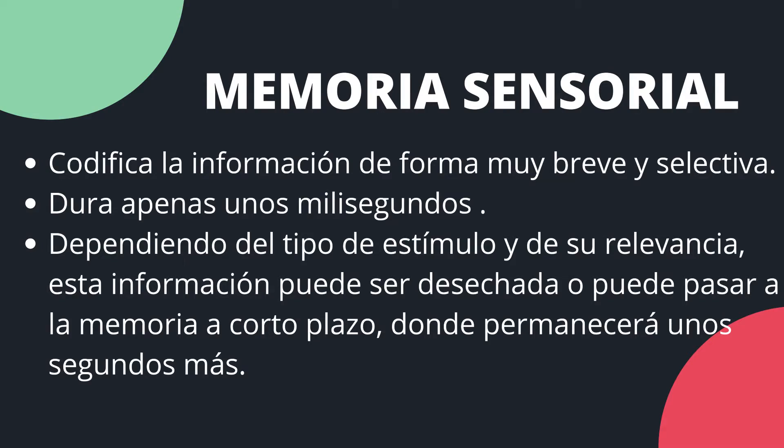Existen muchos tipos de memoria. Aquí vamos a hablar solamente de los más importantes. Uno de ellos es la memoria sensorial. La memoria sensorial codifica la información de una forma muy breve y muy selectiva. Dura apenas unos milisegundos y dependiendo del tipo de estímulo y de su relevancia, esta información puede ser desechada o puede pasar a la memoria a corto plazo, donde permanecerá unos segundos más.